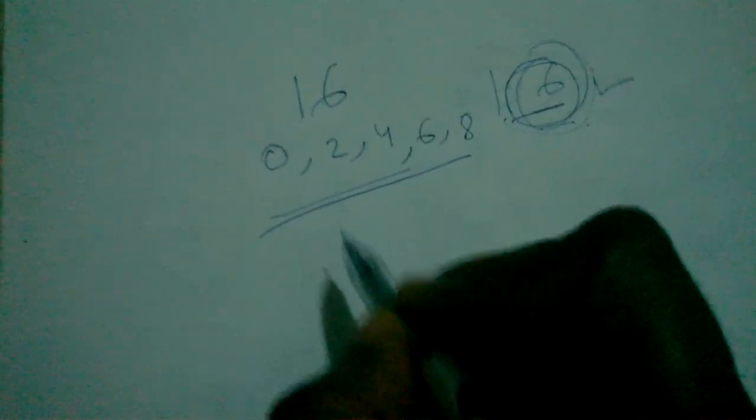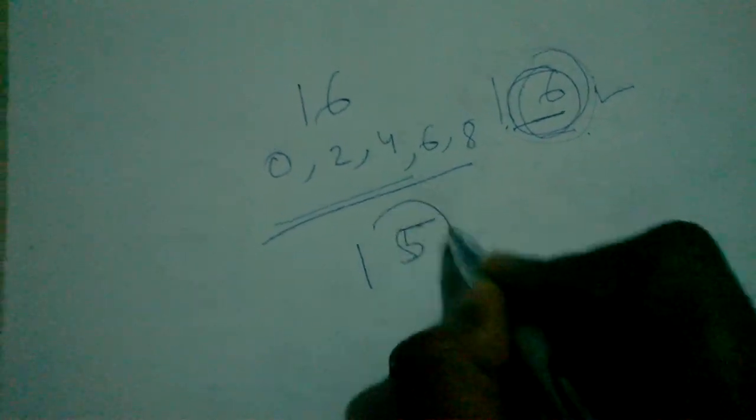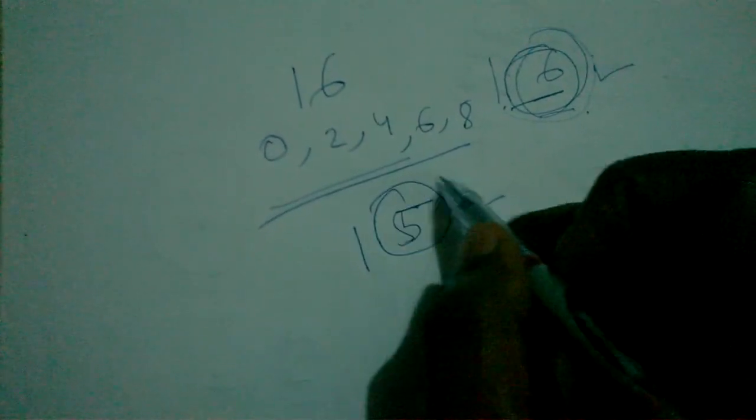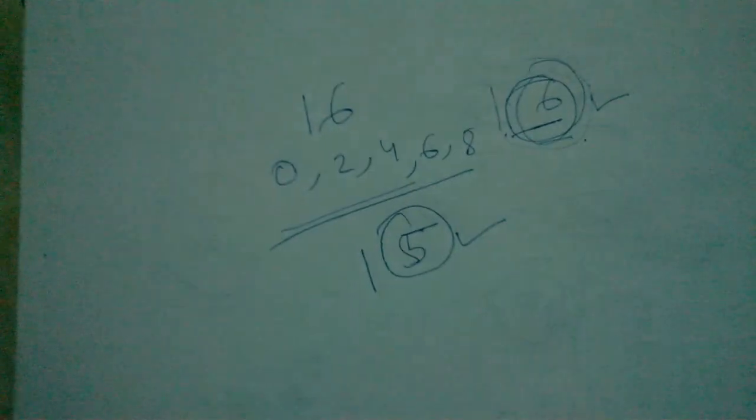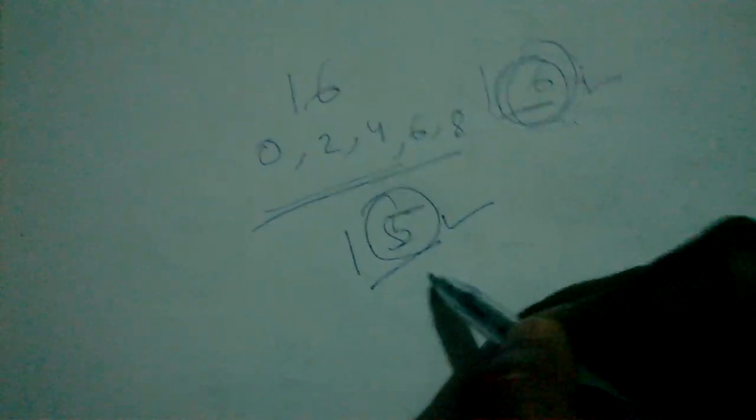Let's take another example: 15. The rightmost digit is 5. Here we see that the rightmost digit is not 0, 2, 4, 6, or 8. So we consider this number as an odd number.